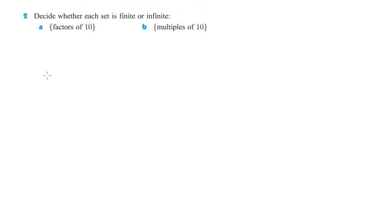Decide whether each set is finite or infinite. Finite you can count, infinite you cannot count. So all the factors of 10. So that would be 1 times 10, 2 times 5. So 1, 10, 2, and 5, that would be finite, because we can count all four of those.